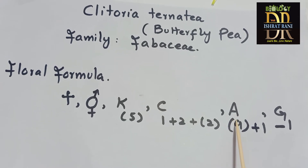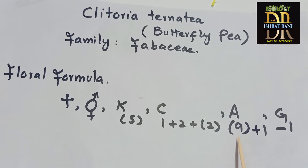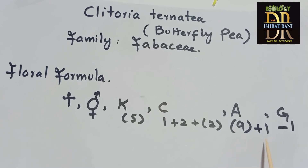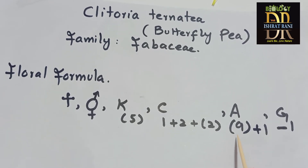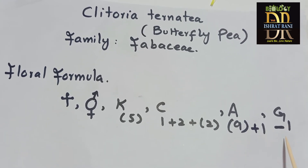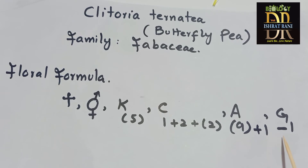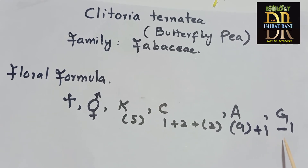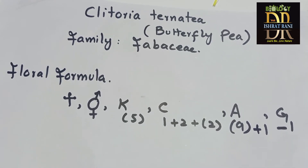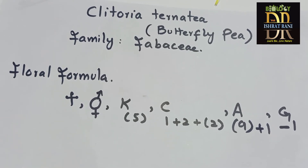Then we have the androecium or stamens — they are diadelphous. Nine stamens are fused and one is free, represented as (9)+1. We have a single carpel — monocarpellary. The ovary was superior, as the flower is hypogynous. This is the floral formula of Clitoria ternatea or butterfly pea, also known as pigeon wing pea.